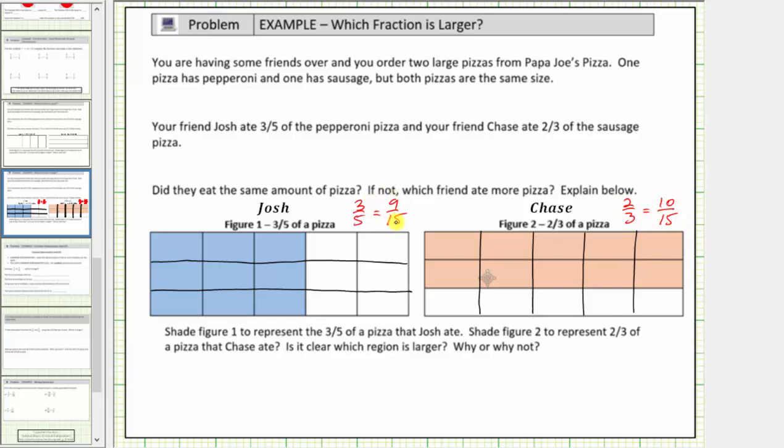So the fraction of nine-fifteenths tells us that Josh ate nine pieces, each piece the size of one-fifteenth of the pizza. And the fraction of ten-fifteenths tells us Chase ate ten pieces the size of one-fifteenth of the pizza, which means Chase ate more pizza. To answer the question, Chase ate more pizza because ten-fifteenths is greater than nine-fifteenths.